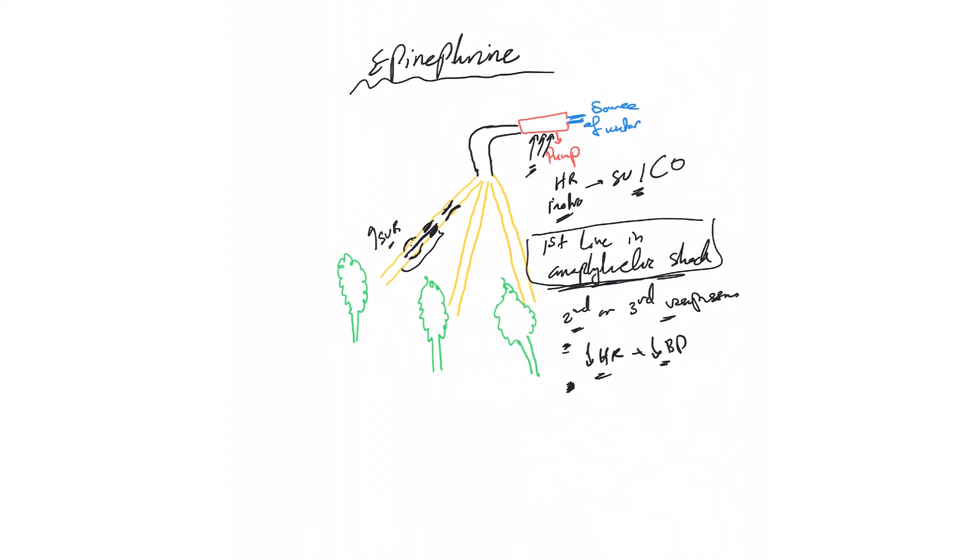Epinephrine can be used as a second or third line in septic shock and cardiogenic shock. It's first-line in anaphylactic shock. Just remember: first-line in anaphylactic, or in other shocks can be add-on second or third agent.